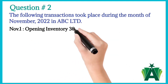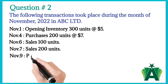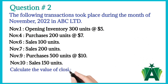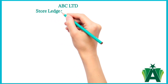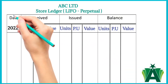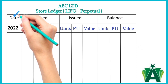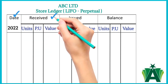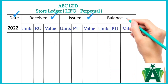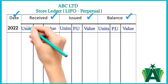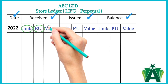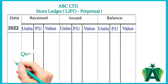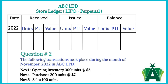Now I will teach you how to prepare a store ledger account under the LIFO method. Let's start to solve this question. The company name and store ledger account — LIFO method perpetual — should be written above the store ledger account. The store ledger will have four main columns: the first column will be date, the second will be received or purchases, the third will be sales or issued, and the last column will be balance. The received, issued, and balance columns will be further divided into three sub-columns: unit, per unit, and total value. The question is placed in front of the store ledger account, and date-wise transactions will be recorded.